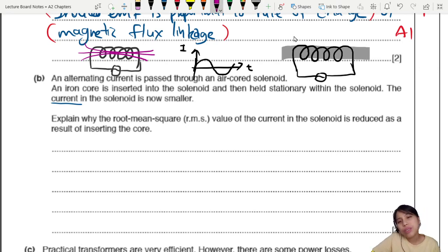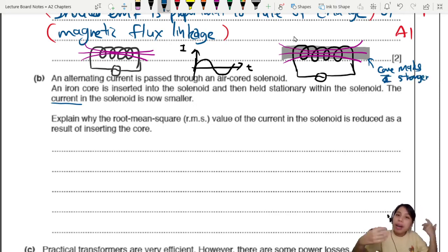That's the current. And you have a certain RMS. But what happens now is that you are going to insert an iron core. So you still have the same solenoid connected to AC. But now there is an iron core. The field is still there. It's still changing at the same AC. But the core now makes the flux much stronger.